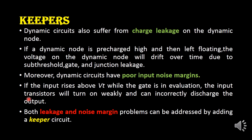Next, let us see the keeper circuit. In dynamic circuits there is a problem called charge leakage. When a dynamic node is pre-charged high, its value is equal to 1 and then left floating. The voltage on the dynamic node will drift over time due to sub-threshold gate and junction leakage. That is, when the output is high the capacitor gets fully charged, but over time this capacitor gets discharged — this is the cause of charge leakage.